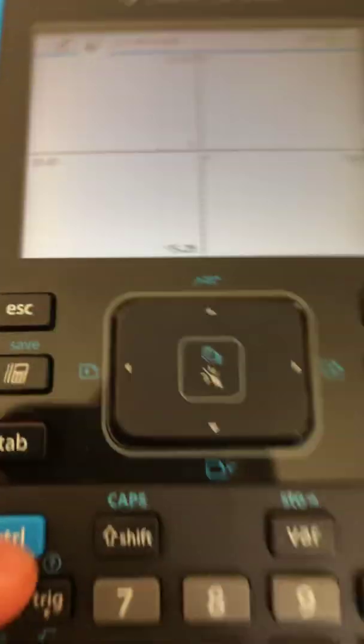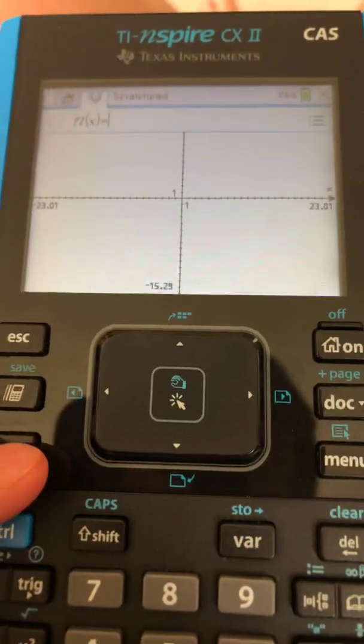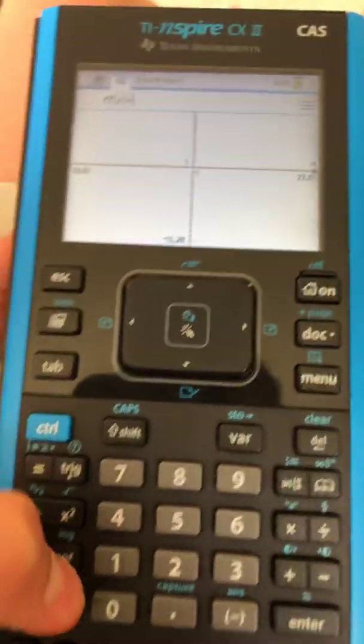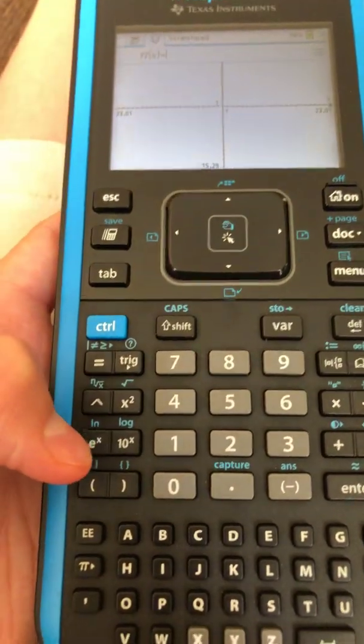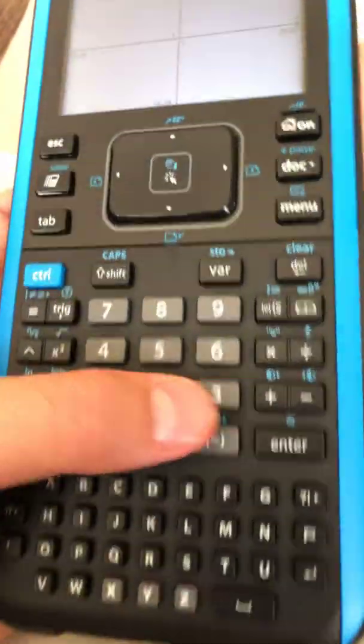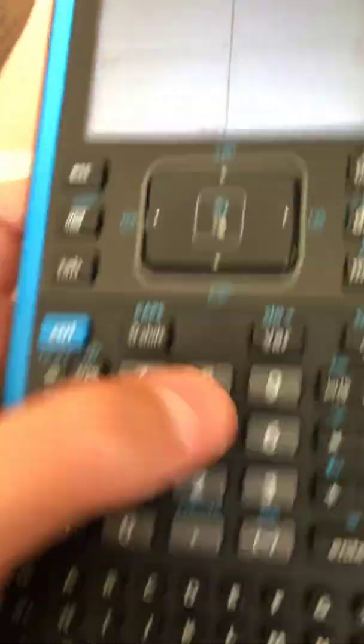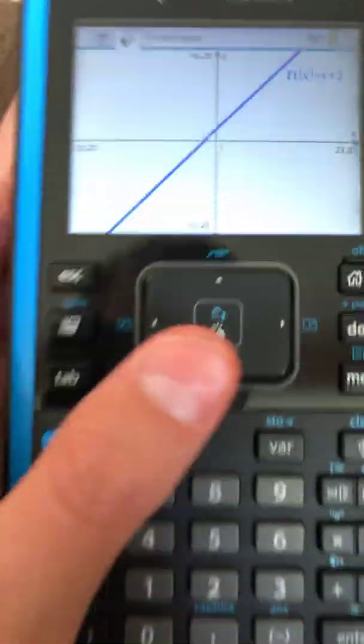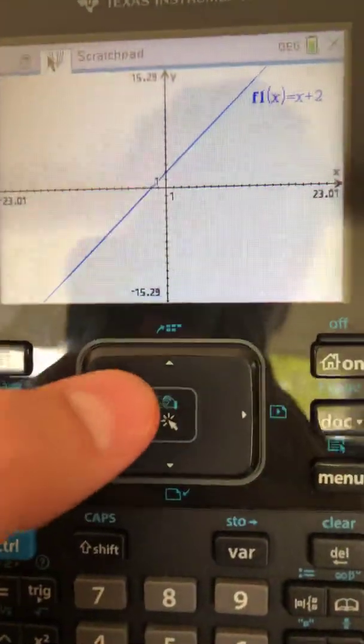Now, how does one graph an equation? You have to hit tab. F of 1 of x, let's just say x plus 2. Just to make it simple, hit enter, and it will show up instantly.